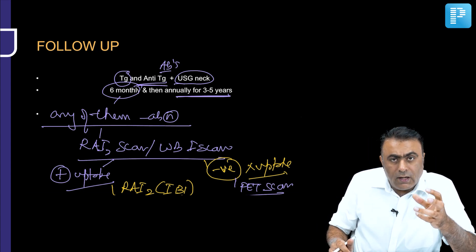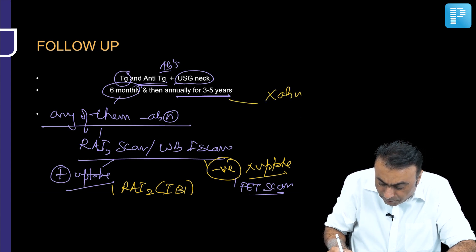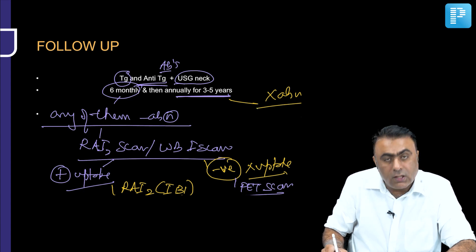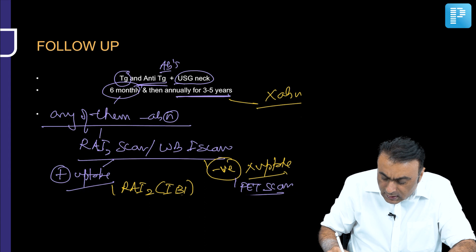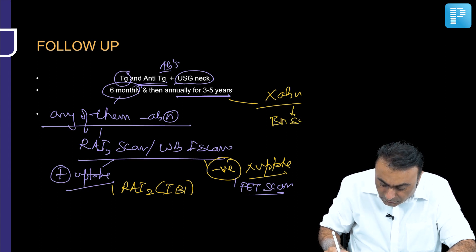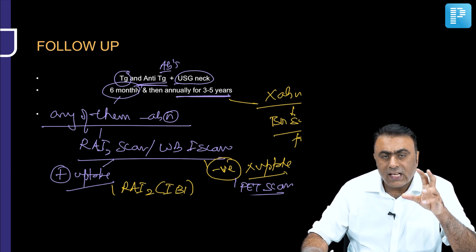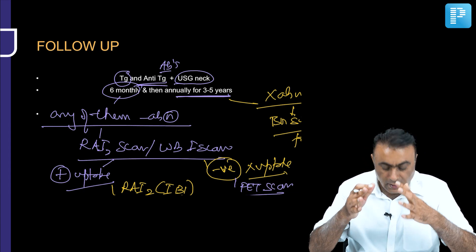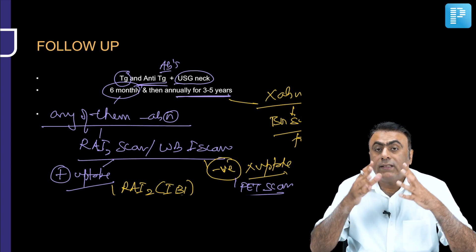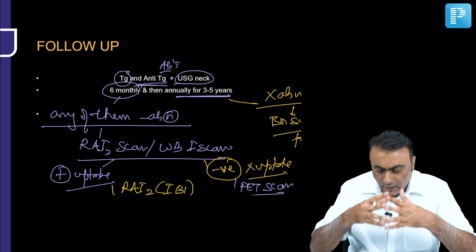If thyroglobulin levels and ultrasound of the neck are both normal with no abnormality found, continue TSH suppression and keep the patient in follow-up. This completes the treatment algorithm for differentiated thyroid cancers.